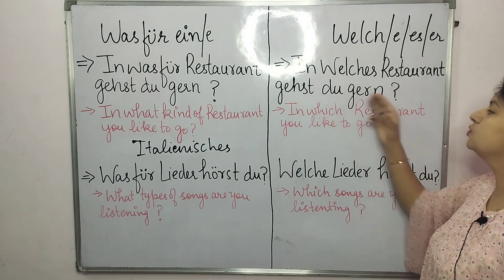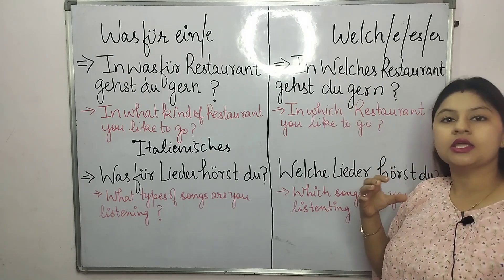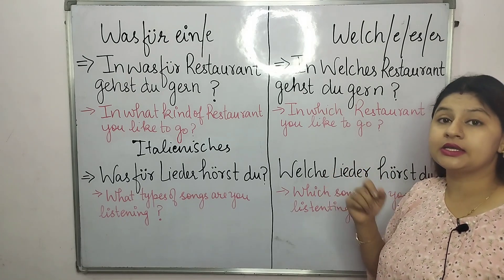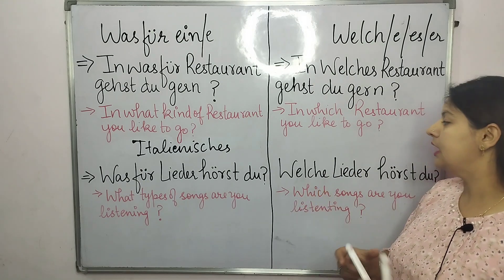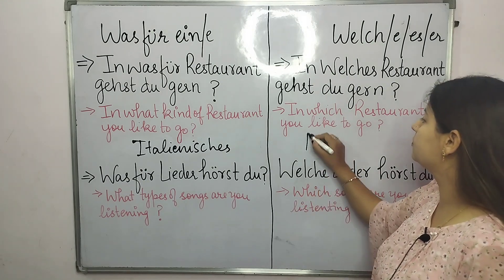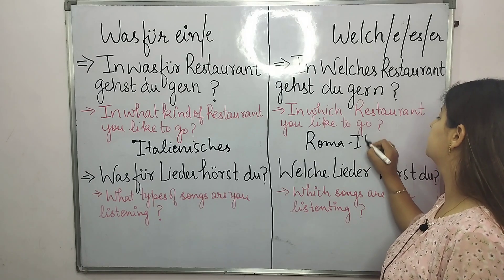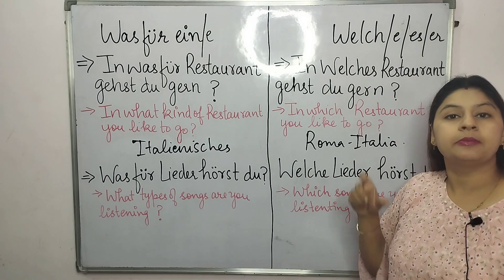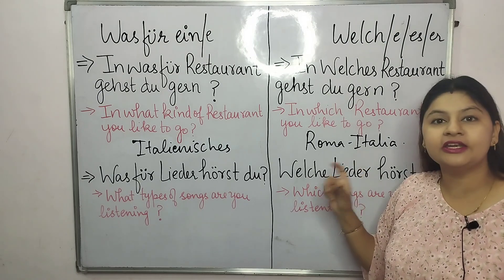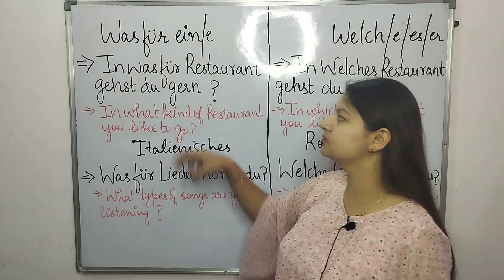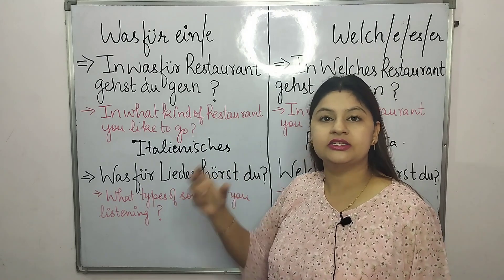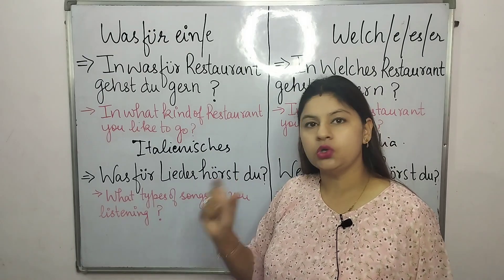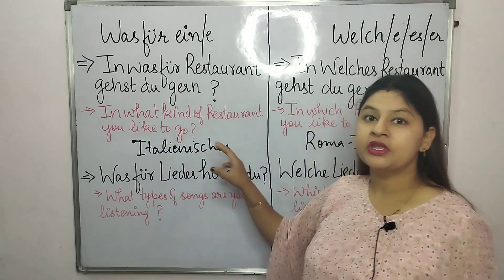But if someone asks 'In welches Restaurant bist du gegangen?' — which restaurant did you go to? — they are asking for a specific answer. So I would name the restaurant, maybe 'Roma Italia' or another specific name. In the 'Was für ein' case I can just give a general idea — Chinese, Indian food — but not exact information.